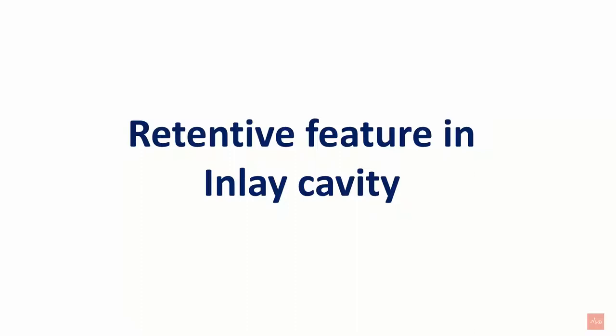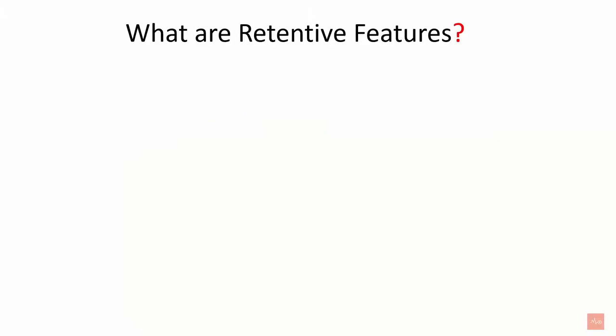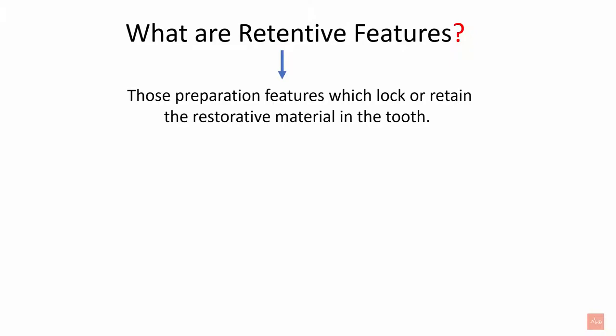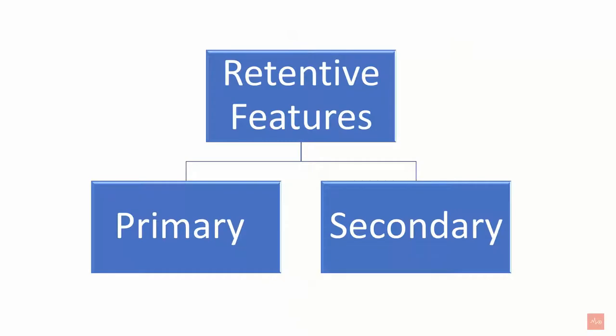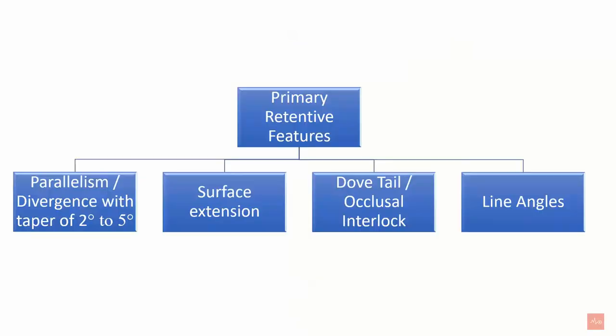Hello friends, welcome back to my class. Today we will be learning about retentive features in inlay cavity preparation. We have already seen retentive features in amalgam cavity preparation and are aware of the terms. To revise, the preparation feature which locks or retains the restorative material in the cavity is known as a retentive feature. There are two types: primary retentive features and secondary retentive features.